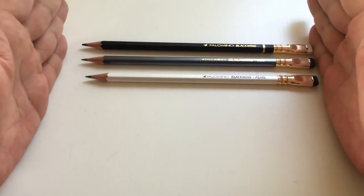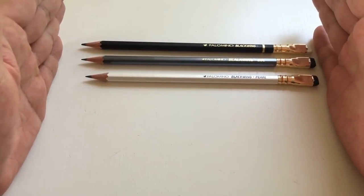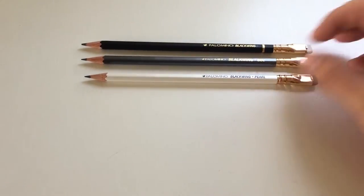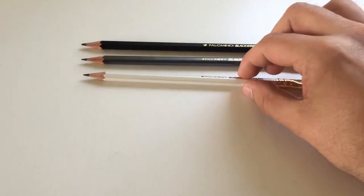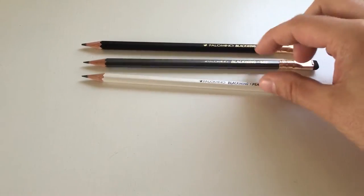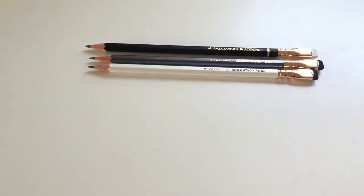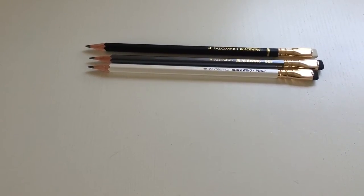They are around 20 centimeters long when they come. So I've used all of them a bit. You can already see that I've used Pearl the most, then second the 602, and the one that I've used the least is the regular black Palomino Blackwing.